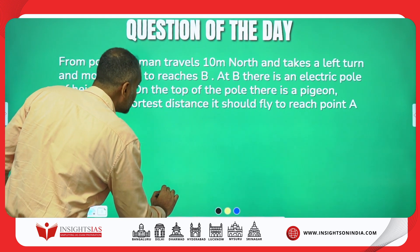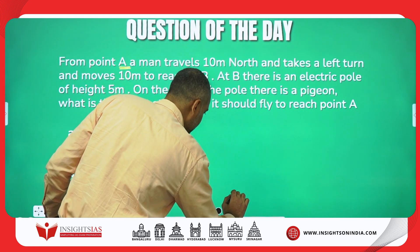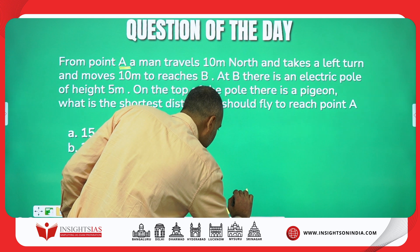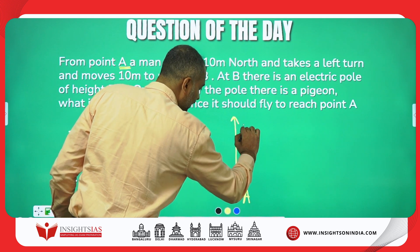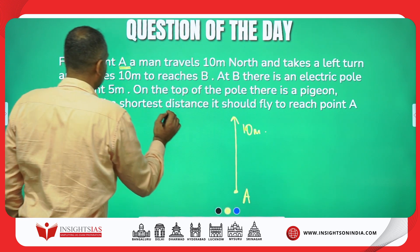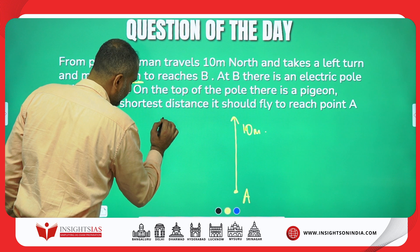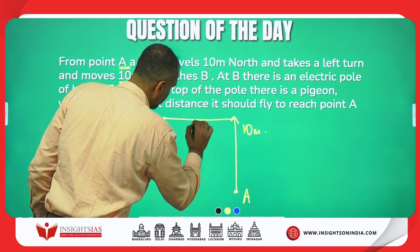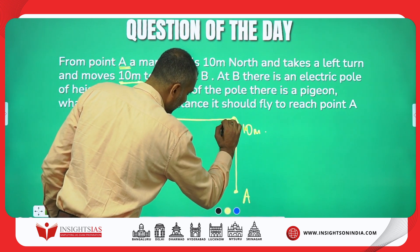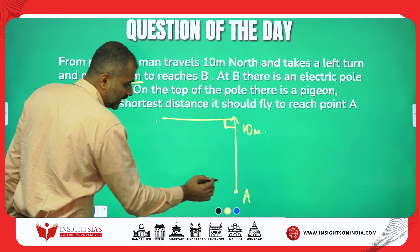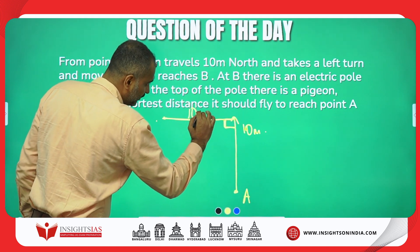From point A, the man goes 10 meters north and takes a left turn. This is point A; he travels 10 meters north, then takes a left turn and travels 10 meters. A left or right turn is always a 90-degree turn. So this is 10 meters and this is 10 meters.